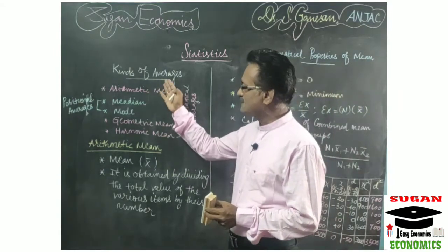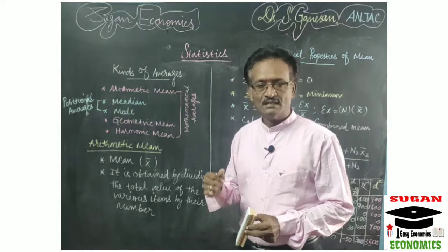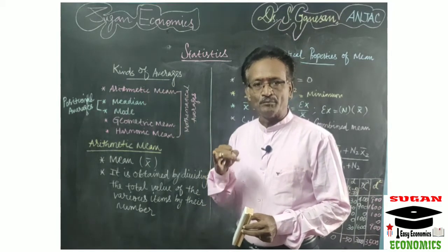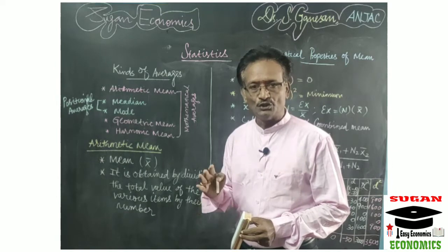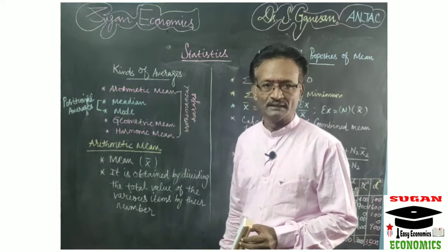Under kinds of averages, there are five kinds: arithmetic mean, median, mode, geometric mean, and harmonic mean.